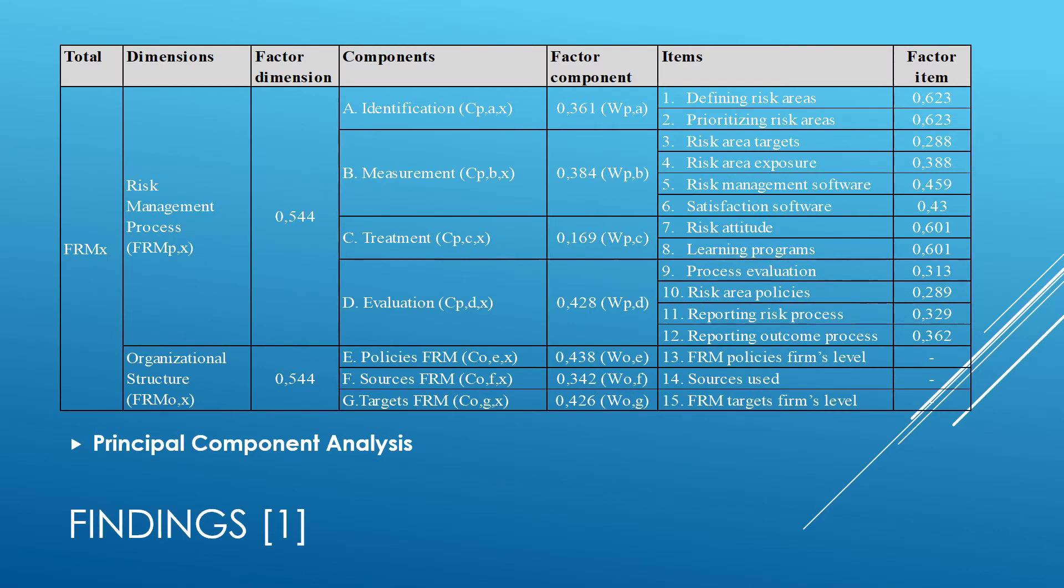Our financial risk management framework contains two dimensions: the risk management process and an organizational structure suitable to embed the process. The risk management process contains four components. Following Vorgen and Vorgen, we defined identification, measurement, treatment and evaluation as the four components within the risk management process, each of them consisting of several items.